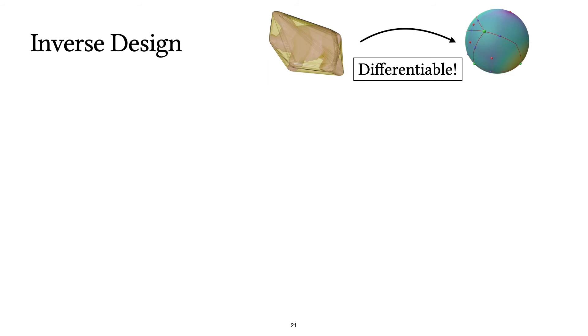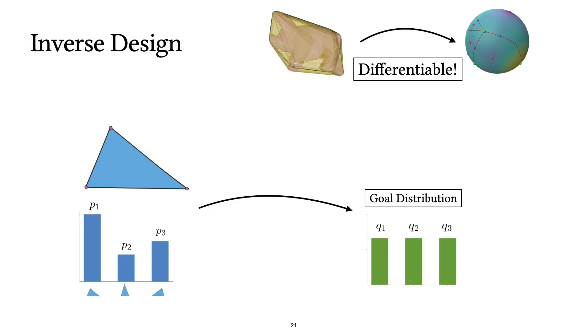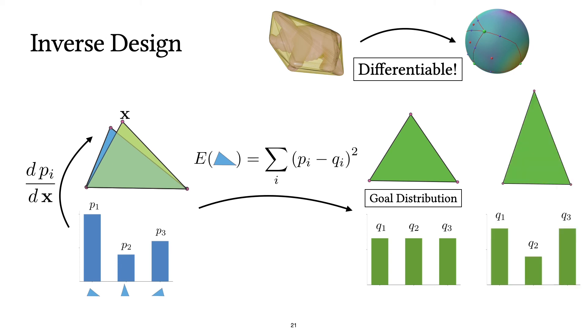Our method is also differentiable. That means we can design shapes with probabilities that we want. For example, take this simple 2D example with this distribution. And let's say we want it to have a uniform distribution. We can use the derivatives of the probabilities that we have computed to minimize a simple energy like this quadratic one. After modifying the geometry, we can end up with a geometry that has exactly the probabilities that we want. And we can do this for any distribution that we want.